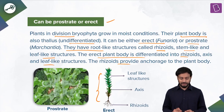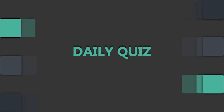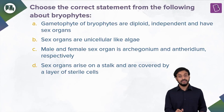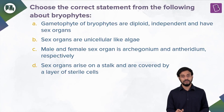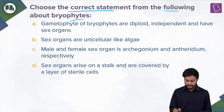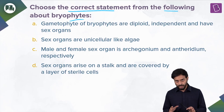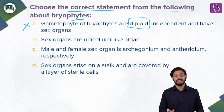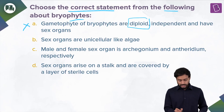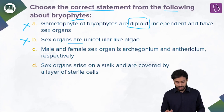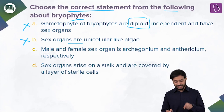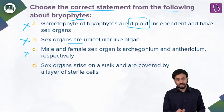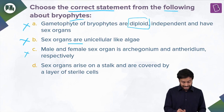This is a very important concept for your examination. Choose the correct statement about bryophytes. Statement: gametophytes of bryophytes are diploid, independent, and have sex organs — incorrect, they are haploid. Statement: sex organs are unicellular like algae — incorrect. Statement: sex organs are multicellular unlike algae — correct. Statement: male sex organ is archegonium and female is antheridium — no, it's the other way: male is antheridium, female is archegonium. Statement: sex organs arise on a stalk and are covered by a layer of sterile cells — yes, this is correct.